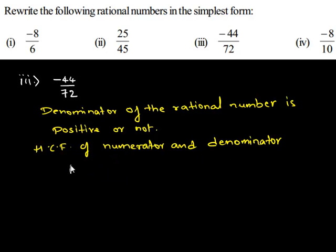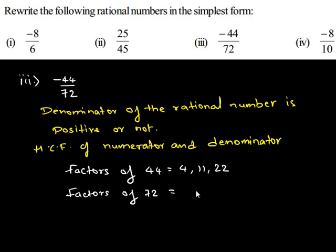First, factors of 44: we have 4, 11, and 22. Now let us see the factors of 72: we have 1, 2, 4, 6, 8, 9, 18, 24, and 36.